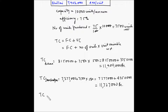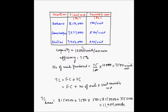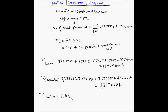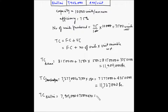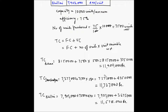The total cost for Bhilai is rupees 7,903,000 plus 7,500 multiplied by rupees 490. This equals 7,903,000 plus 3,675,000, giving a total of rupees 11,578,000. We have now found the total cost of production at all three locations: Bokaro, Jamshedpur, and Bhilai.